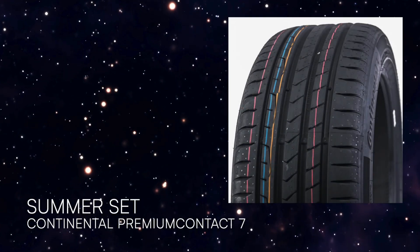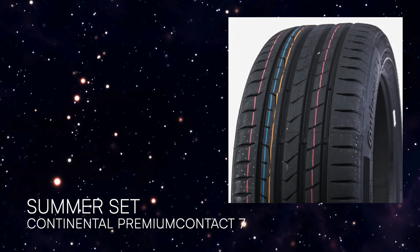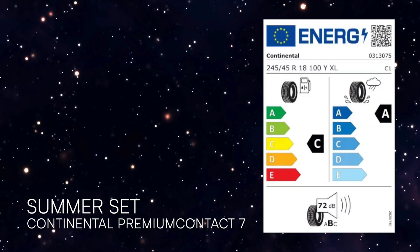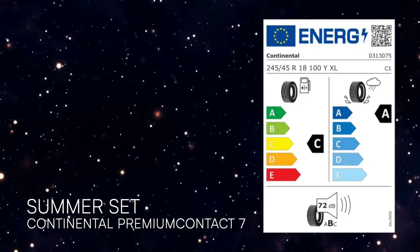The summer set was the popular premium model Continental Premium Contact 7 with an EU label declaring a noise level of 72 decibels.